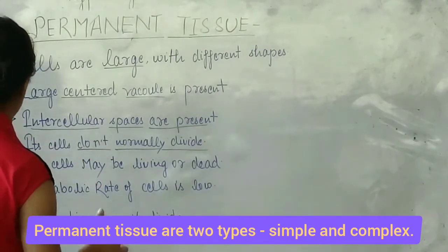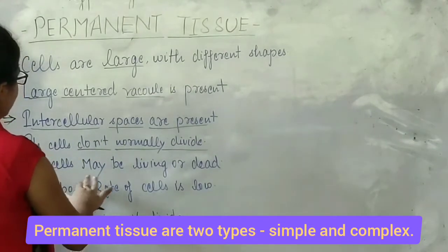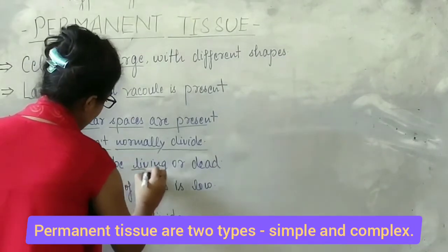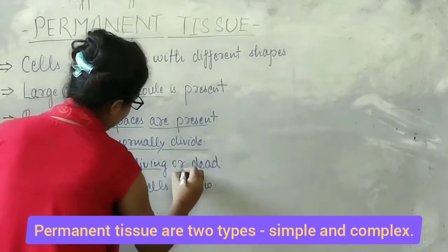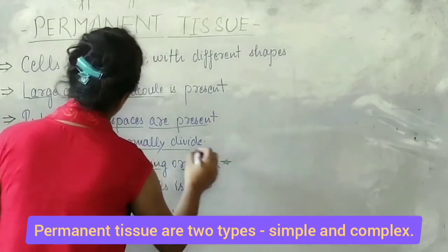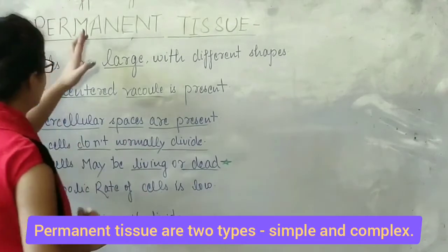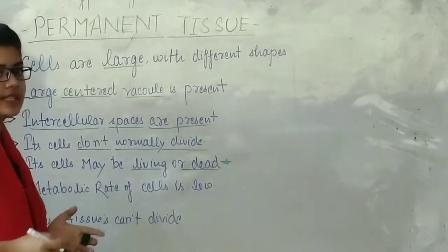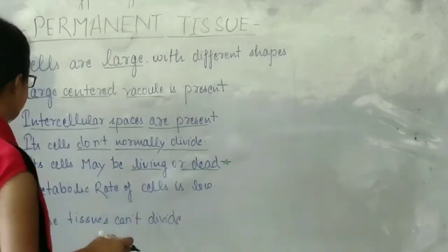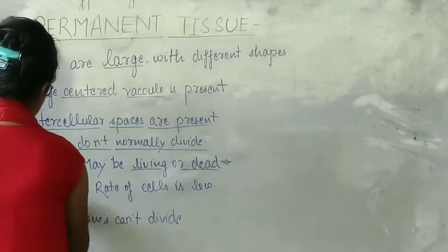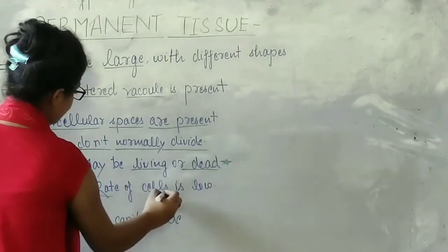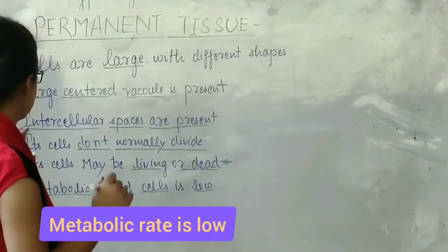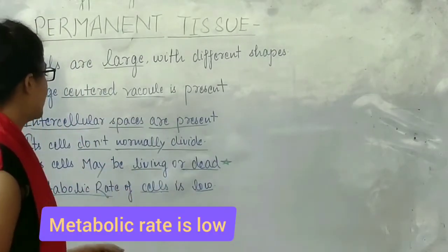The cells of permanent tissue may be living or dead, because this tissue can be of three types — some cells are dead and some are living. The metabolic rate of cells in permanent tissue is low because these cells are not part of active growth.